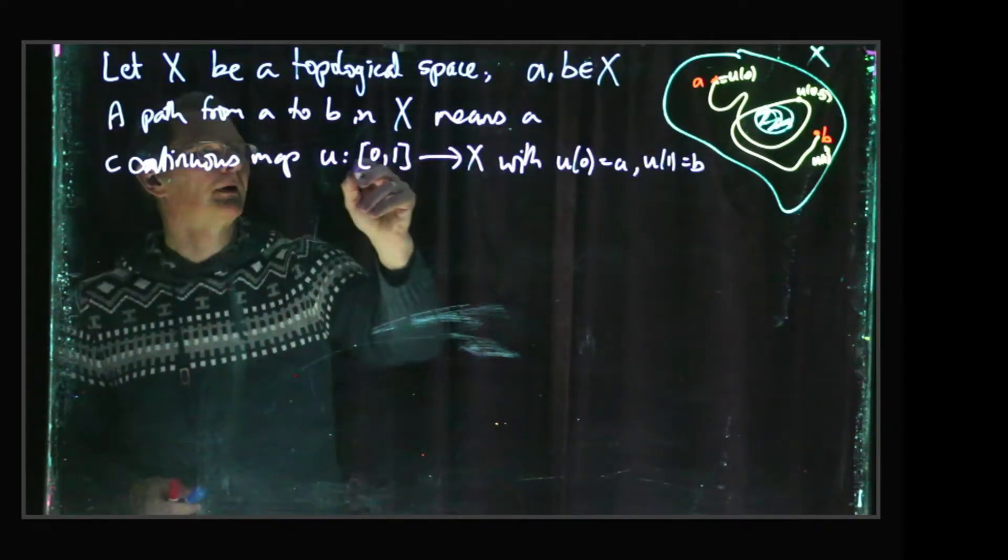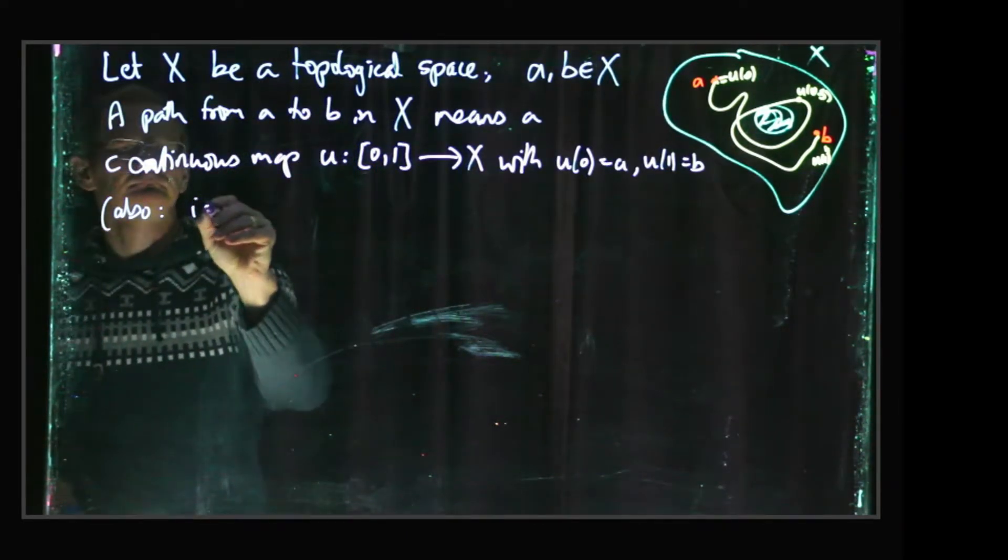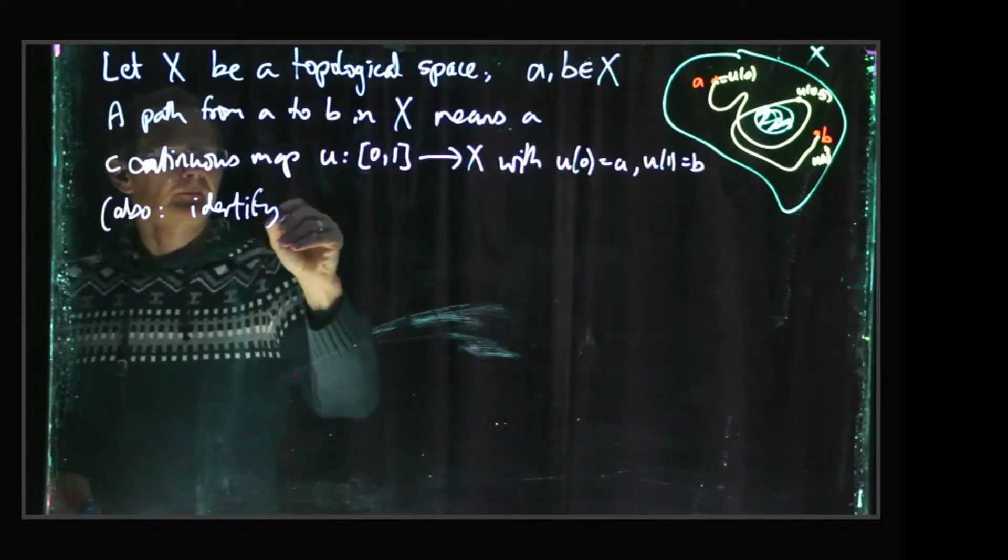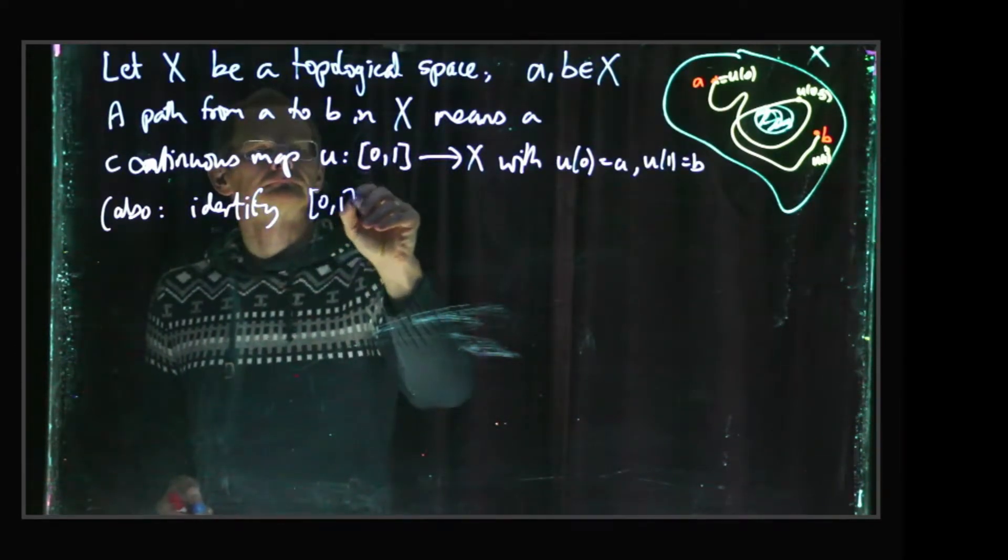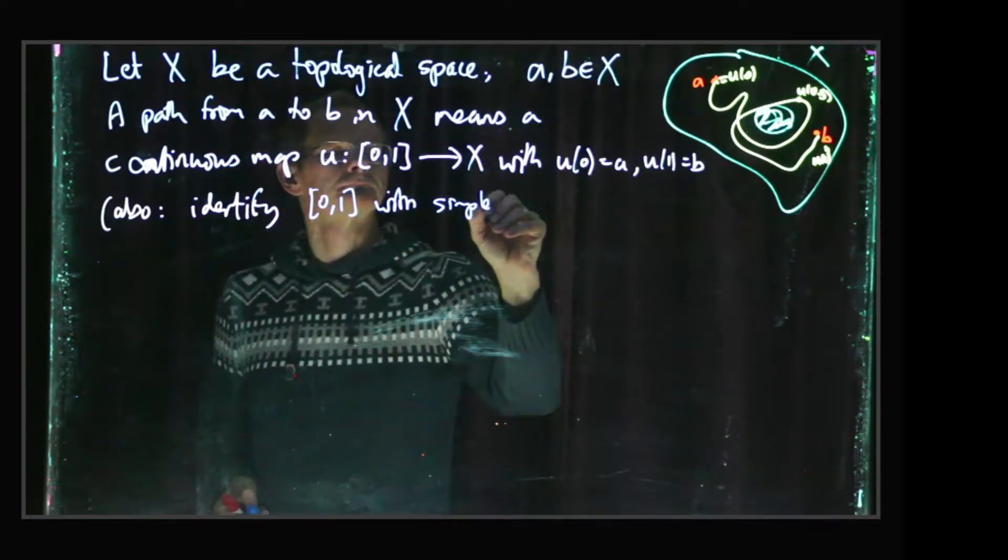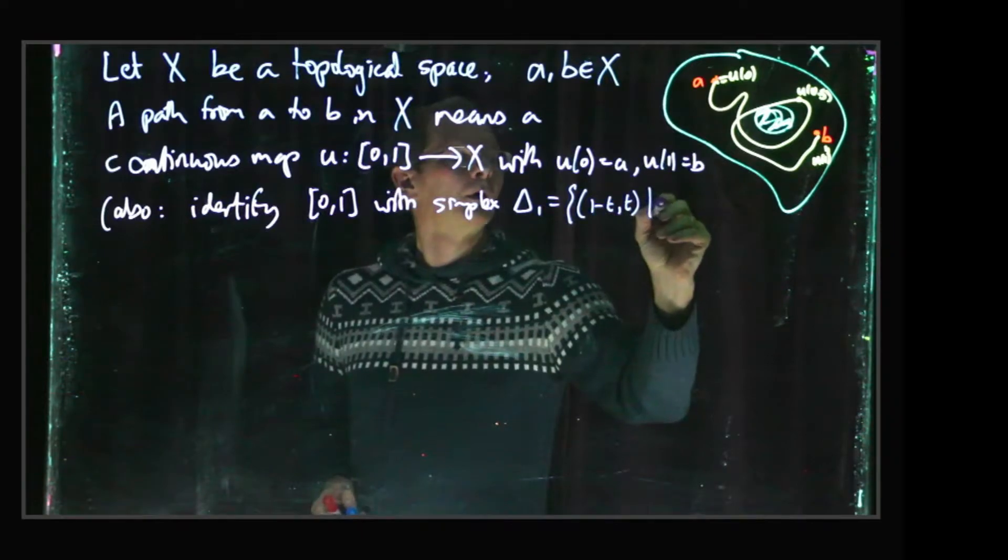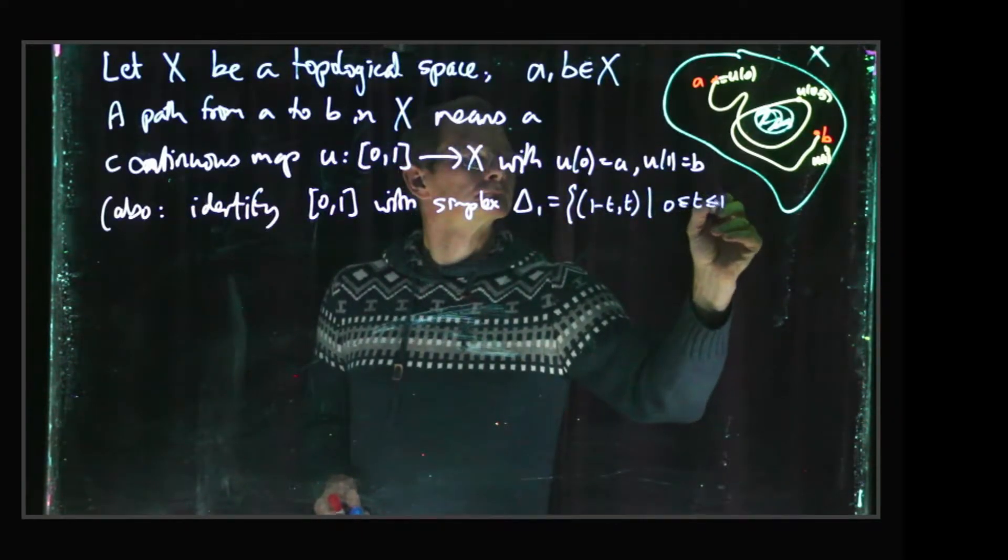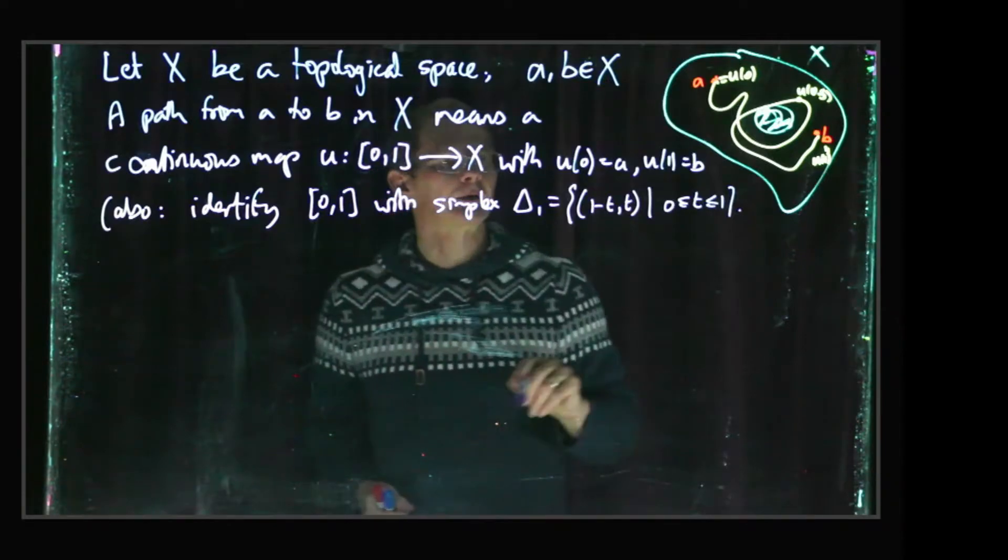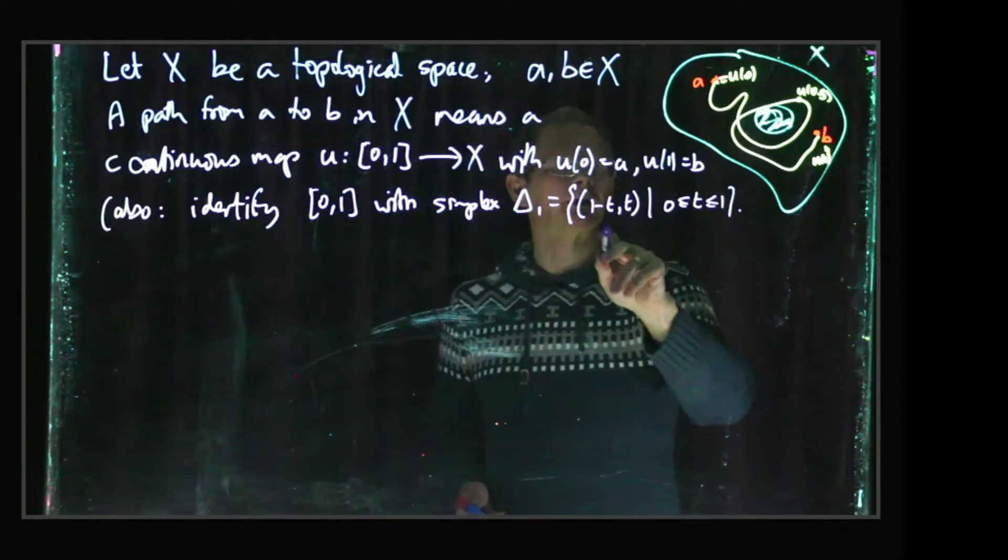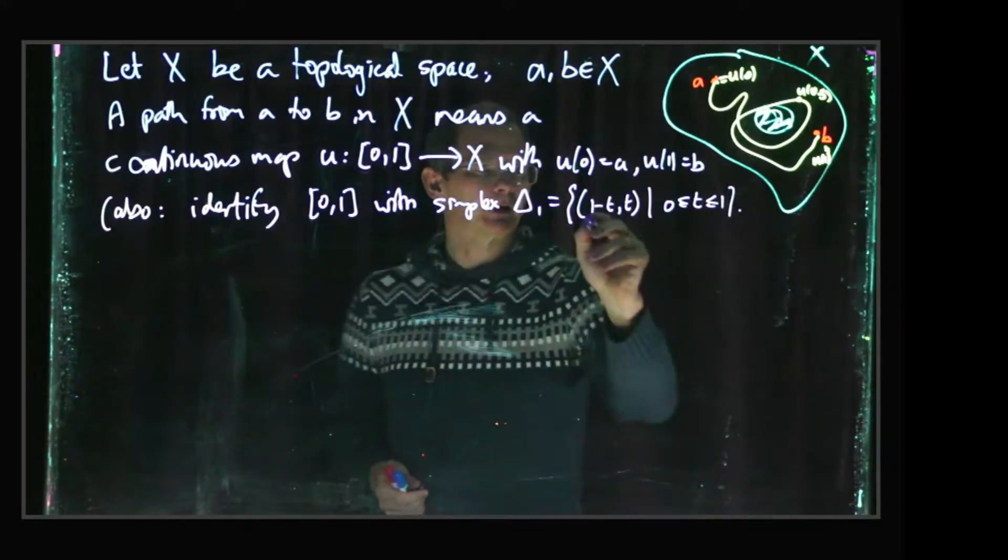And so as I said, a path is going to be a map out of the unit interval [0,1]. But sometimes we want to identify the [0,1] with the simplex delta 1. And delta 1, remember, is by definition pairs (X0, X1) where X0 and X1 are non-negative, and X0 plus X1 equals 1. But that means that (X0, X1) has the form (1 minus T, T) for some T in the unit interval. And we're going to identify this with T.